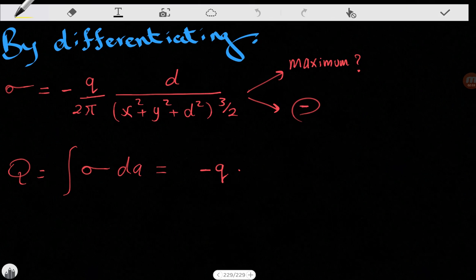And from this expression we can get some insight. We can know that it's negative, so our induced charges are going to be negative as we assumed. And of course, the maximum of this charge density happens at x equals y equals zero.